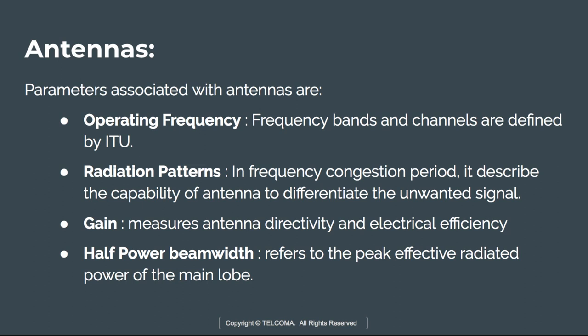The next parameter is the radiation pattern. Radiation patterns depend upon the antenna's size and frequency. There are two types: co-polar radiation pattern and cross-polar radiation pattern. In a frequency congestion period, it describes the capability of the antenna to differentiate unwanted signals — that is, it removes unwanted signals from the original information signals.